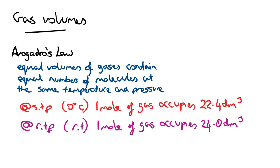By experiment it has been found that at standard temperature and pressure — STP, 0°C — one mole of gas takes up a volume of 22.4 dm³, which is 22.4 liters. Also, at room temperature and pressure, one mole of gas occupies 24.0 dm³, where we're dealing with a temperature of around 25°C.